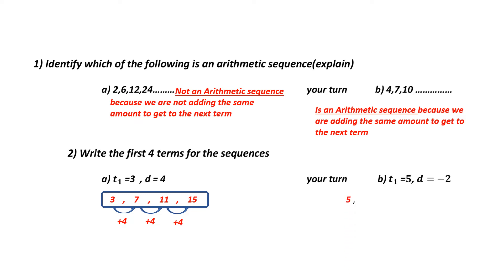For B, we started with 5. This one's a little tricky because my common difference is negative 2, which means I'm going to subtract 2 each time. So 5 minus 2 is 3, 3 minus 2 is 1, and 1 minus 2 is negative 1. That should be the answer you should have gotten.